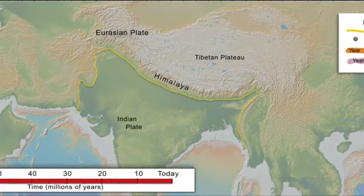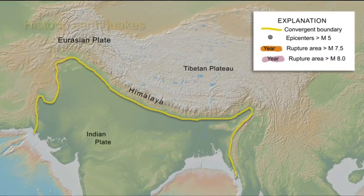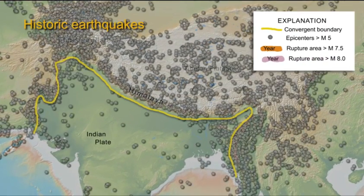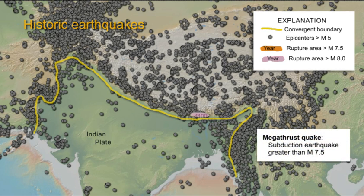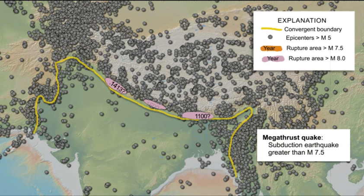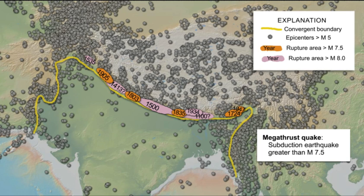Regional compression produces broadly distributed earthquakes north of the 2,900-kilometer Himalayan plate boundary. However, the historical earthquake record indicates that the largest earthquakes, shown by their rupture areas, occur on the shallow portion of the megathrust boundary.